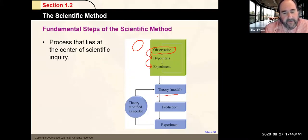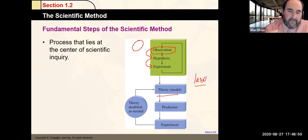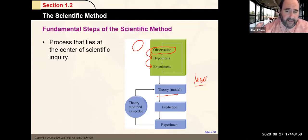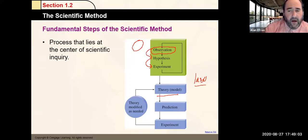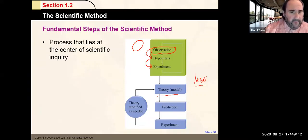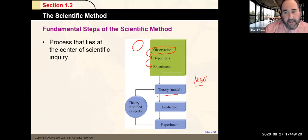A theory is a model or explanation of what you've been observing. The difference between a theory and a law is that a theory can later be proven incorrect or may not be correct in all aspects — it may be revised. A law, on the other hand, is something that will always occur the exact same way, no exceptions.